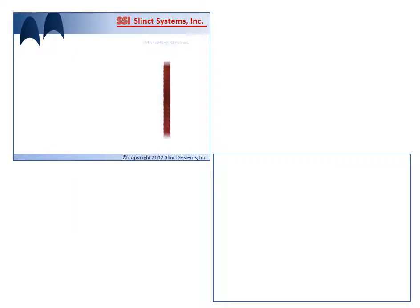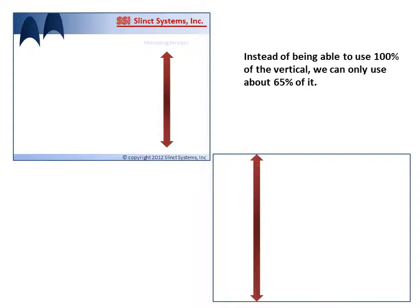Here's another way to look at it. We can measure the vertical. Instead of being able to use 100% of the vertical with a slide template, we can only use about 65% of it. Again, a loss of white space — a loss of the ability to build an aesthetic, beautiful slide that guides learners' attention to the most important aspects.